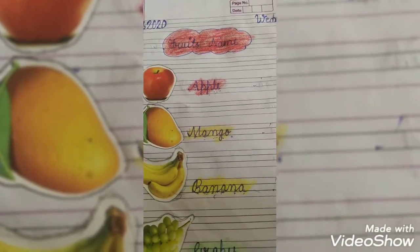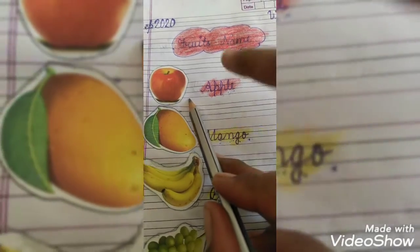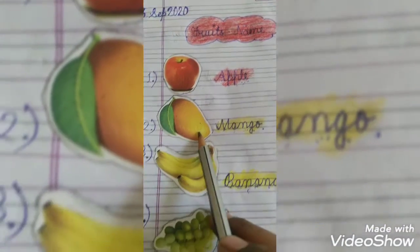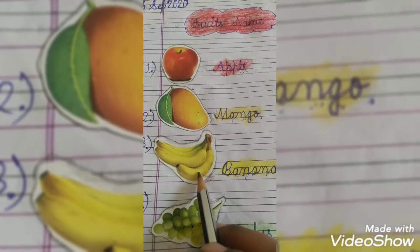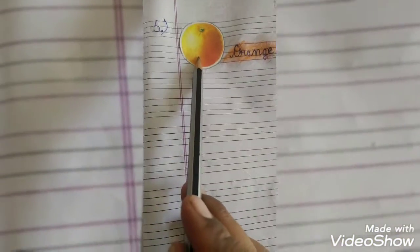Now repeat it with me. Apple. Apple. Mango. Mango. Banana. Banana. Grapes. Grapes. Orange. Orange.